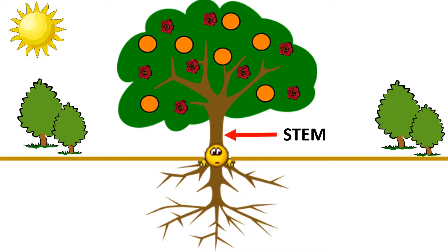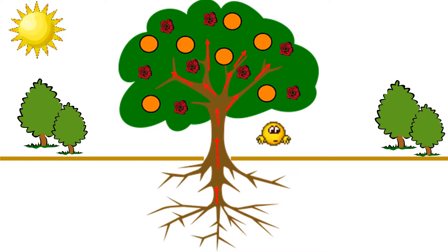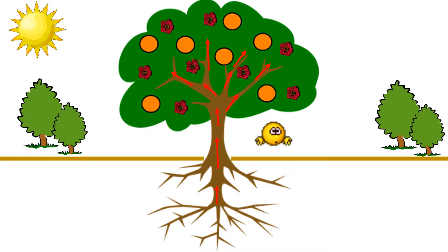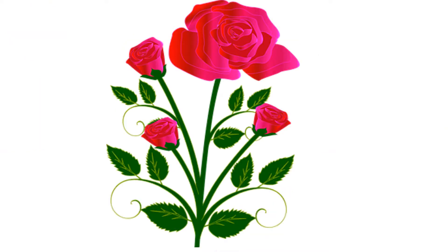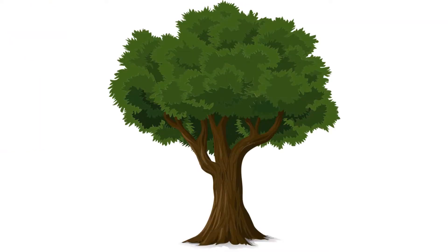Stem. Stems are attached to roots. The stem carries water and nutrients from the root to the rest of the plant. Some stems can be soft and bendable, while others are woody and strong.